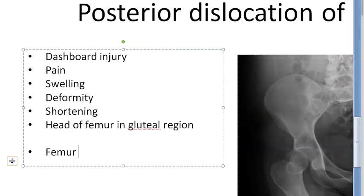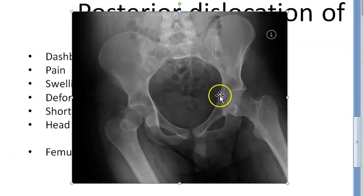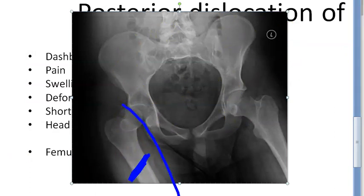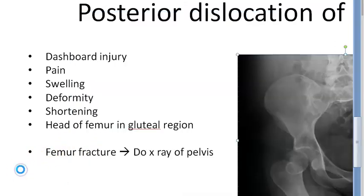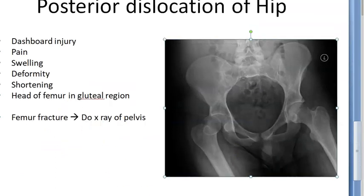If there is a femur fracture, always do an x-ray of the pelvis to make sure there is no dislocation. The pelvis x-ray gives you the full picture — you might only check the femur fracture itself, but the full pelvis x-ray is where you will see any dislocation, as visible even in this x-ray.